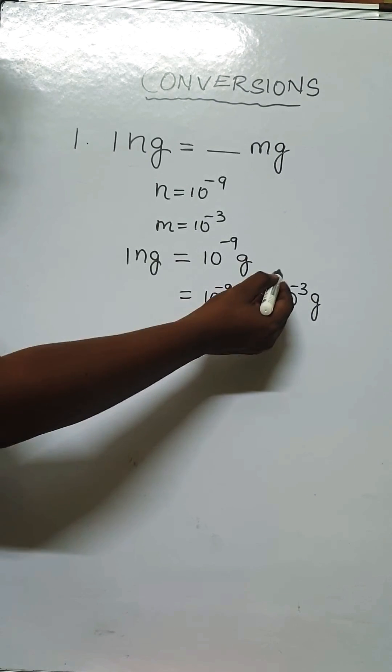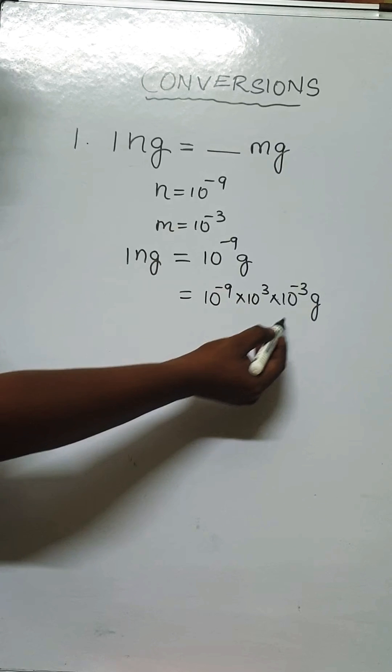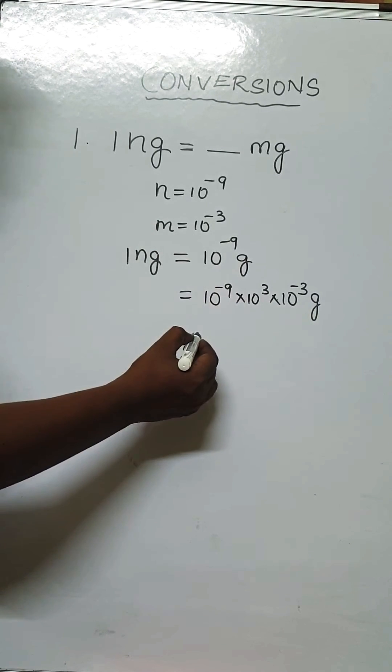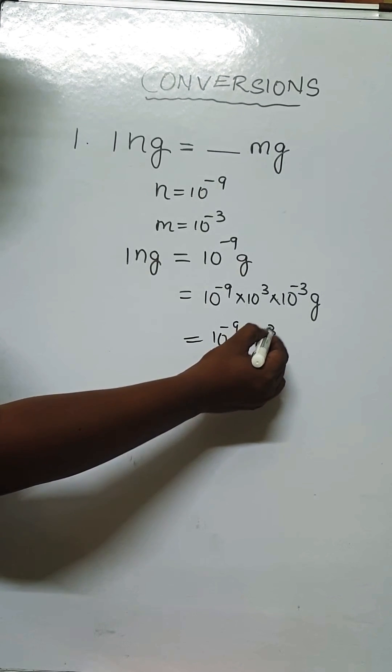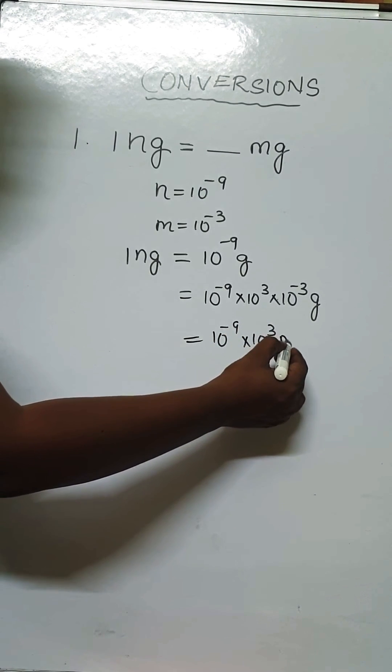If you multiply with 10 power 3 and 10 power minus 3, if this gets canceled, again we get the same value. As 10 power minus 3 is milli, so we can write this as: I am writing 10 power minus 9, same, 10 power 3, same. In the place of 10 power minus 3, I am writing milligram.